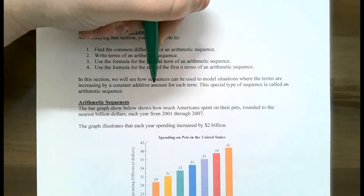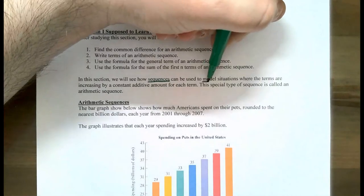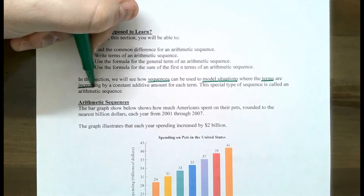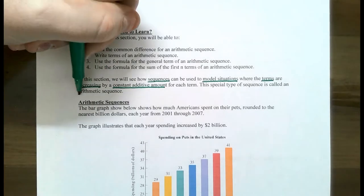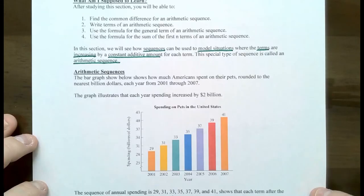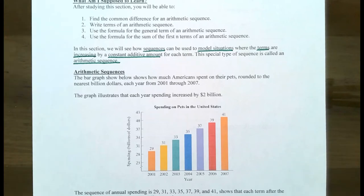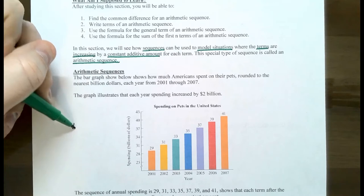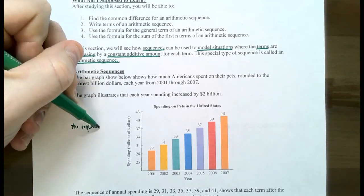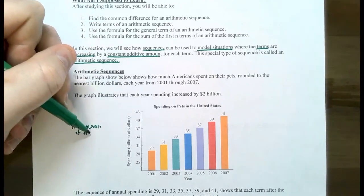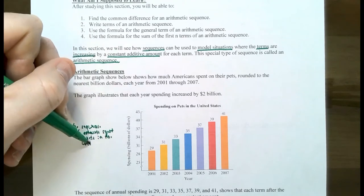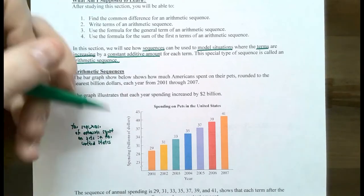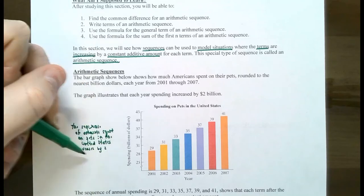In this section we already know what sequences are from the previous video, but now we're going to use sequences to model situations where the terms are increasing by a constant additive amount from one term to the next. If you have this special type of sequence, it's called an arithmetic sequence. Let's start with an example. This bar graph shows the amount of money that Americans spent on their pets, rounded to the nearest billion dollars each year between 2001 and 2007. The sequence of amounts spent on pets in America increases by two from one term to the next.